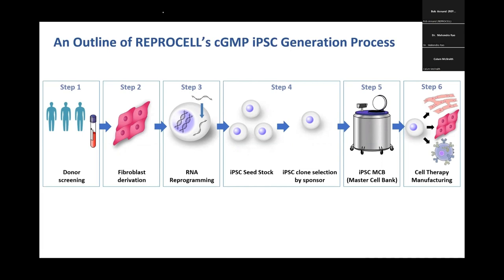The first step is collecting donors — there's a screening process for the donor and then a collection of whatever tissue sample you're going to use as starting material. In the case of ReproCell it's fibroblasts; in other cases it might be blood or some other tissue sample. You then use a process of reprogramming to make those tissue cells into iPSC. The next step is to make a seed stock of iPSC.